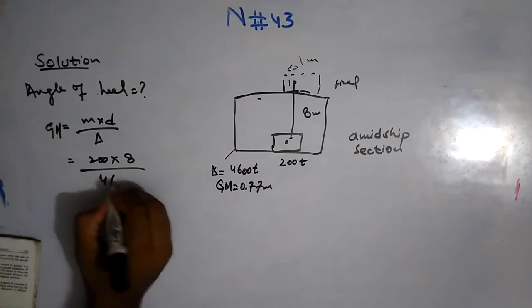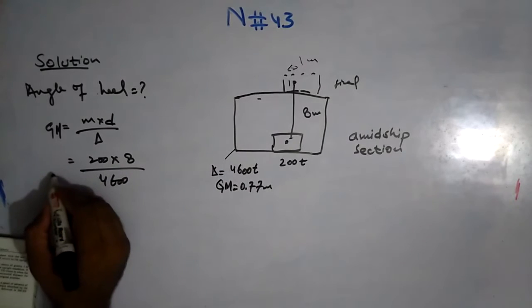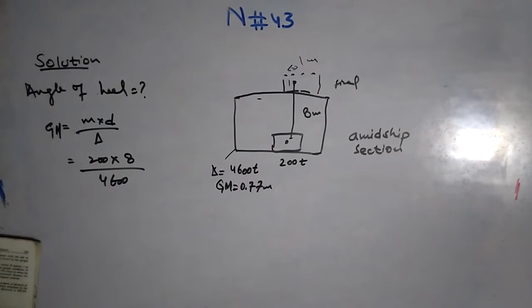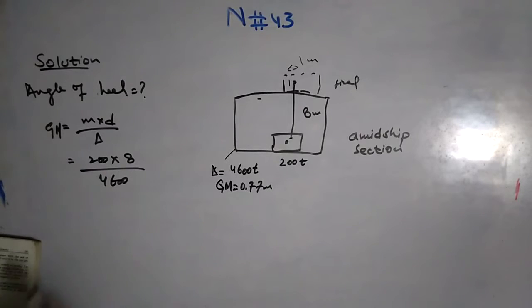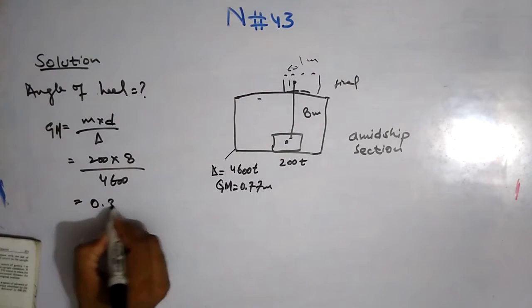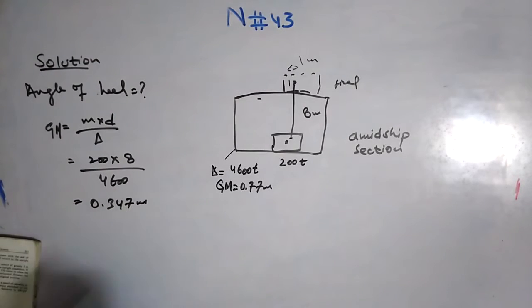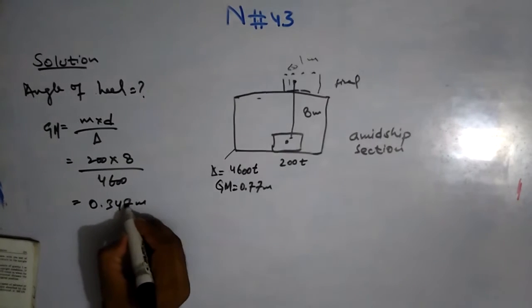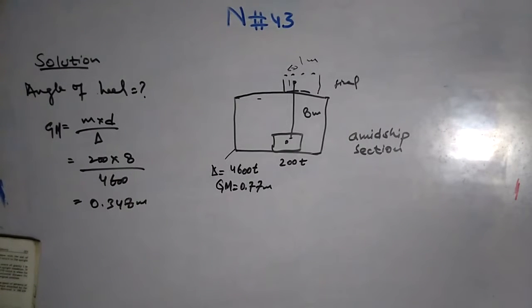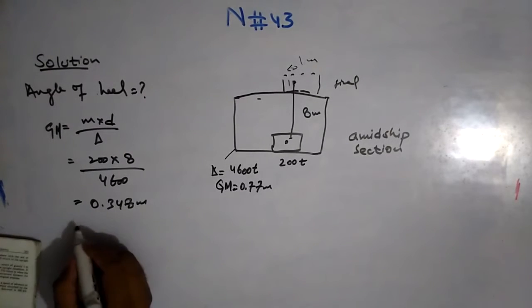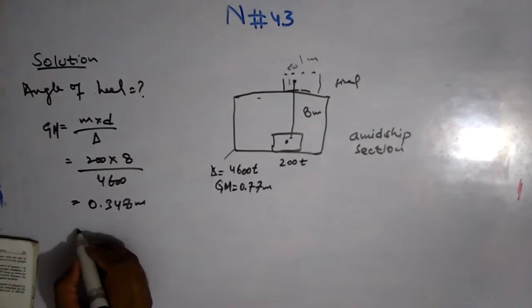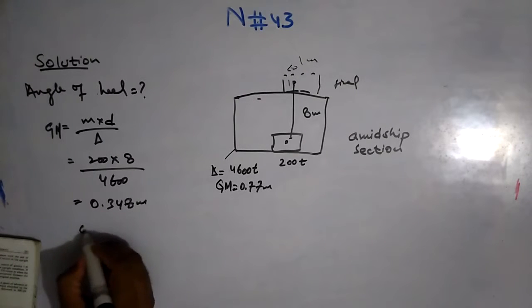I have 200 tons, distance I have 8 meters, and tonnage of the ship, this will give me 200×8 divided by 4,600. My answer is 0.347 meters.